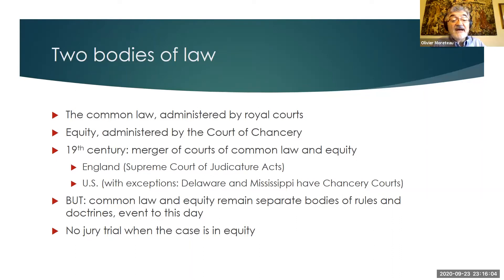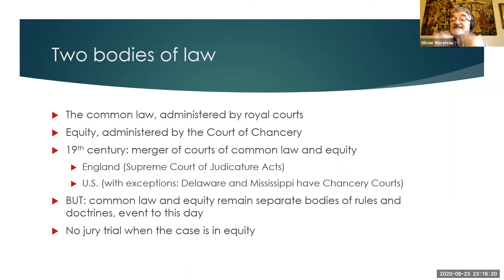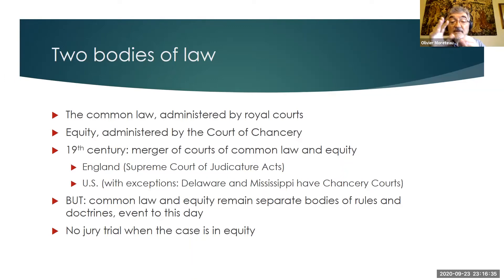Having two systems of courts was not without inconvenience — sometimes you needed a principal remedy based on common law and an accessory remedy based on equity, requiring two separate cases in two different courts. This is why in the 19th century England merged the courts of common law and equity through the Supreme Court of Judicature Acts. The United States did the same; today only Delaware and Mississippi still have a separate Chancery Court — otherwise any court can administer both common law and equity.